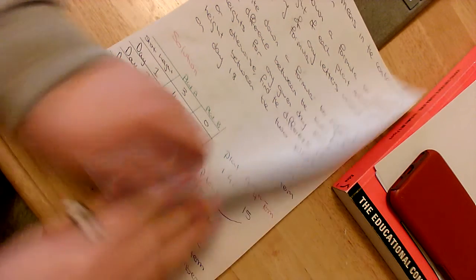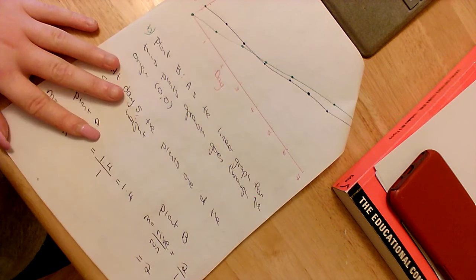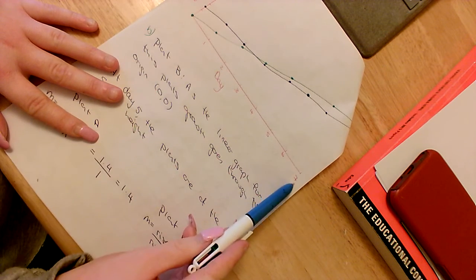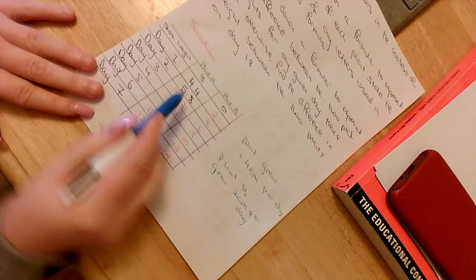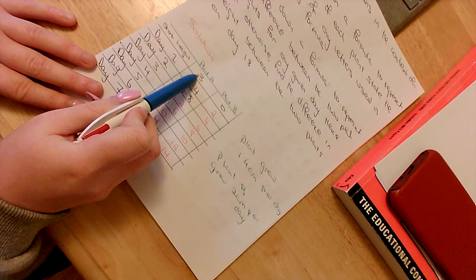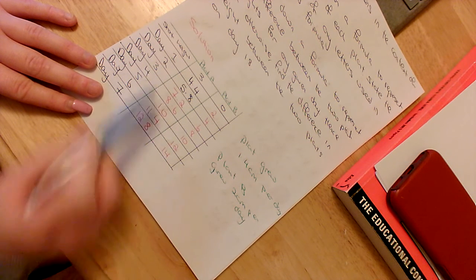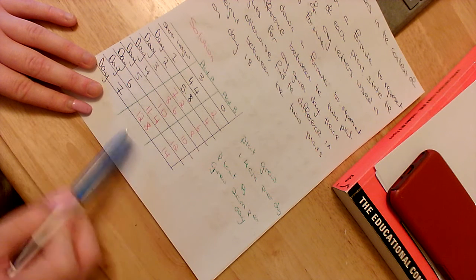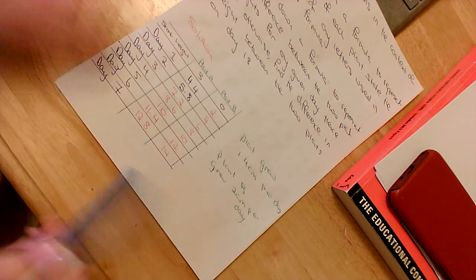Then you're asked to graph it. I'll show you the graph — my graph didn't work out very well because I don't have graph paper. The days go along the x-axis and height goes up the y-axis. For Plant A, the first point starts at 3 on the y-axis; Day 1 is at (1, 4.4); Day 2 is at (2, 5.8); Day 3 is at (3, 7.2), and so on. Do the exact same for Plant B.